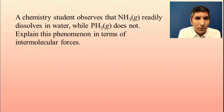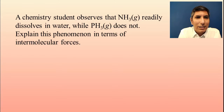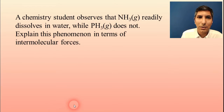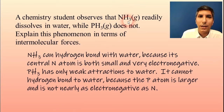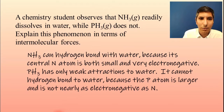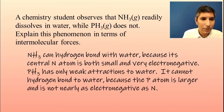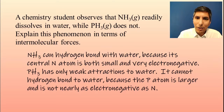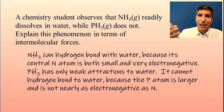Let's say a chemistry student observes that ammonia, NH3, readily dissolves in water while PH3 gas does not. Explain this in terms of intermolecular forces. It has to do with the fact that ammonia can hydrogen bond with water, because its nitrogen atom is both very small and very electronegative. The PH3 molecule only has fairly weak attractions to water — it's not able to hydrogen bond because the phosphorus atom is larger and not nearly as electronegative as nitrogen. So hydrogen bonding can help explain why some substances dissolve in water and others do not.